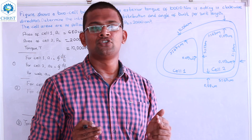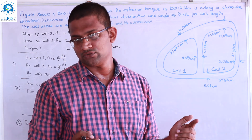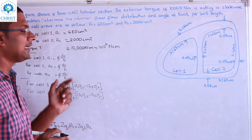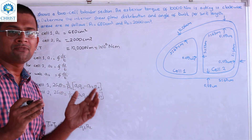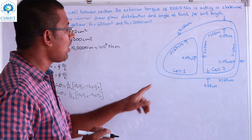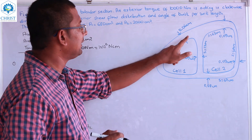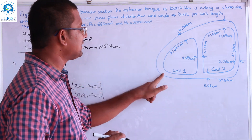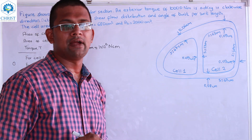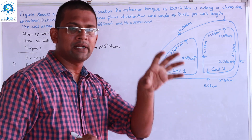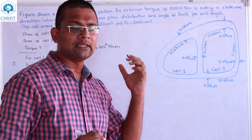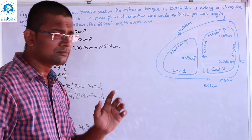We are determining the values of A1, A2, and A12. A1 is equal to the surface integral of ds divided by t along the cell boundaries, where t is the thickness.